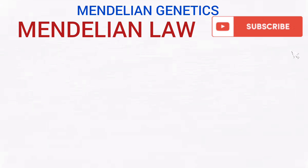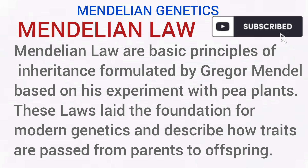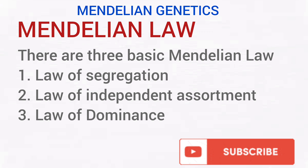Let's talk about the Mendelian laws. The Mendelian laws are the basic principles of inheritance formulated by Gregor Mendel based on his experiments on pea plants. These laws lay the foundation for modern genetics and describe how traits or characters are passed from parents to offspring. There are three basic Mendelian laws: the first law, also regarded as the law of segregation; the second law, the law of independent assortment; and the third law, the law of dominance.